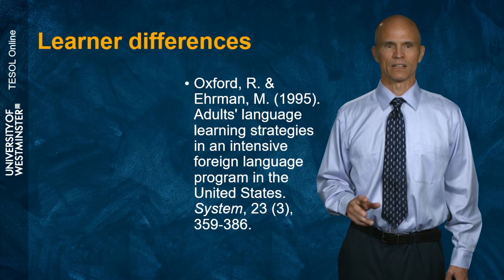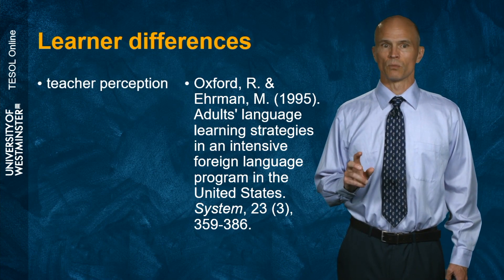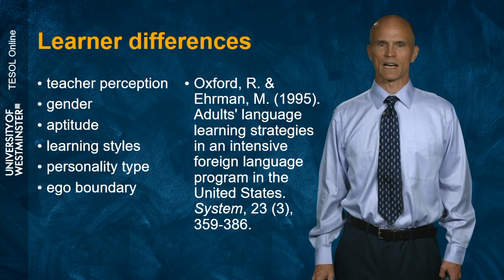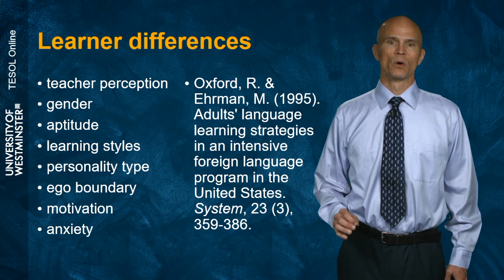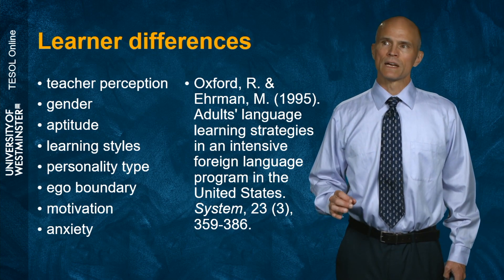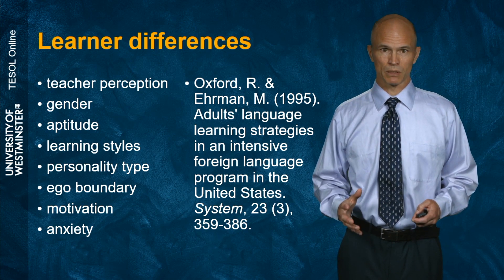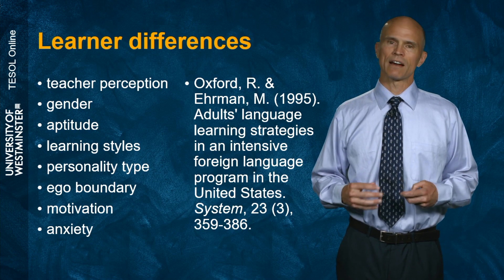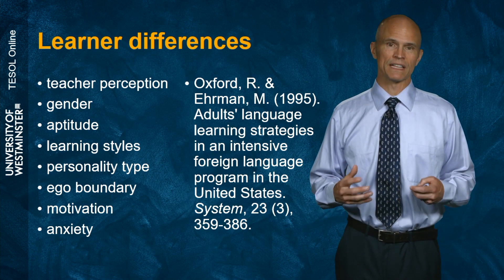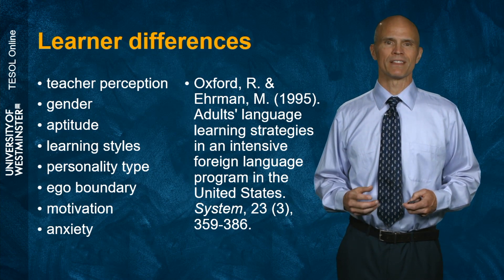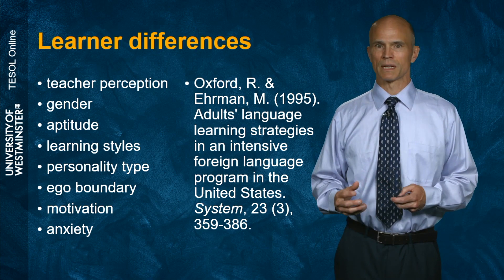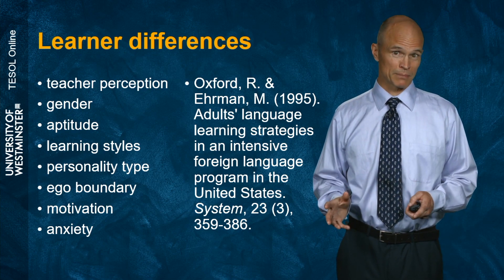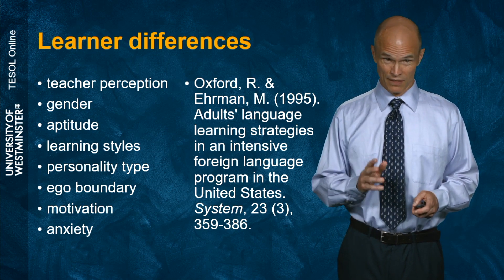We are concerned with the list of learner differences used by Oxford and Ehrman: teacher perception, gender, aptitude, learning styles, personality type, ego boundary, motivation, and anxiety. This list seemed to be a comprehensive and appealing list of possible learner differences, and it has had quite a long life on the internet and in other research. However, I've noticed over time that the list has been changed — some elements removed, some modified by later writers and researchers — and there's sometimes not an entirely cohesive match-up with the original list.